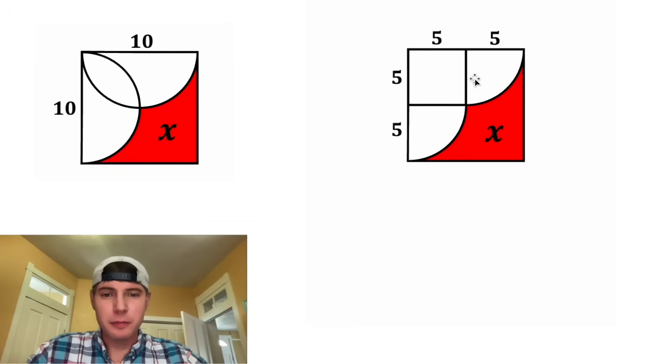So now we've split our white region up into these three pieces. This one right here is a square of 5 times 5, which means the area is 25. And this blue portion right here was half of the semicircle, or in other words, a quarter circle.